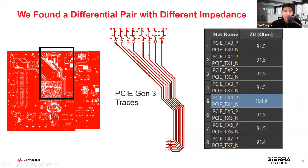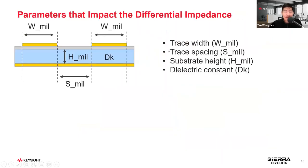Recap: we did analysis on these PCIe Gen 3 traces and we found a different differential impedance in the layout. Now what we're going to do is look at what the parameters and their impact on the differential pair.